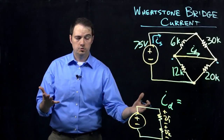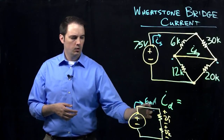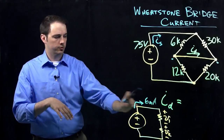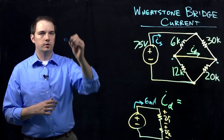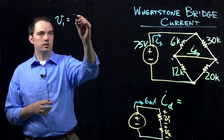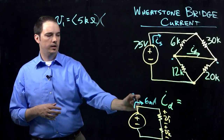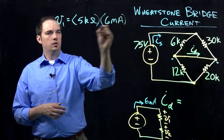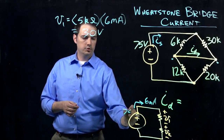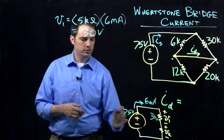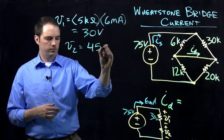To find V1 and V2, we can use the source current IS of 6mA along with the equivalent resistances. The parallel combination of 6k and 30k gives 5 kilohms, and multiplying by 6mA gives V1 = 30 volts. Since the source voltage is 75 volts and there's a 30-volt drop across V1, V2 must be the difference — 45 volts.